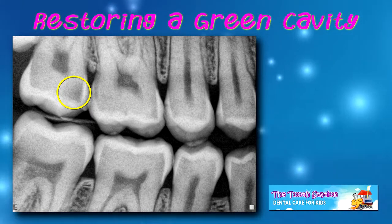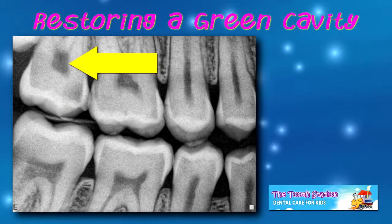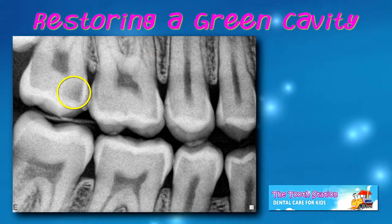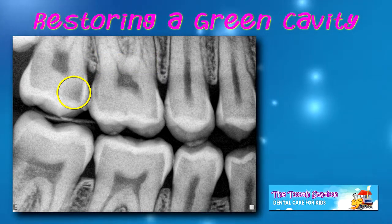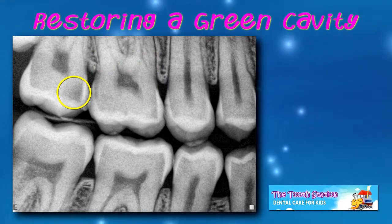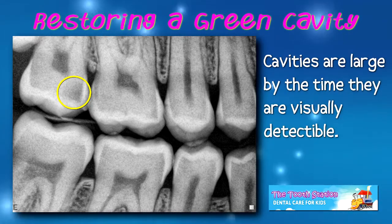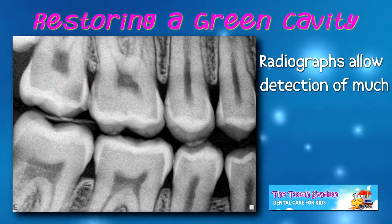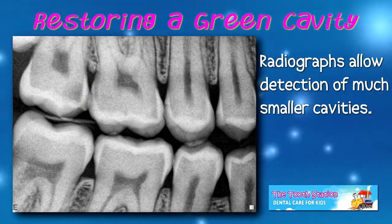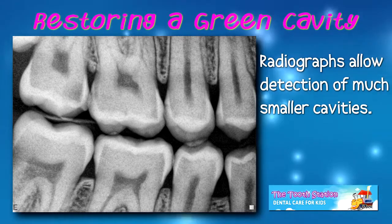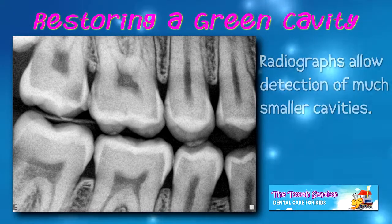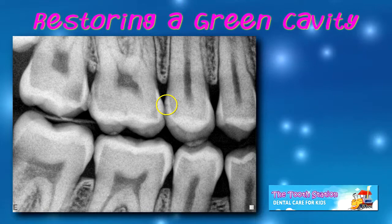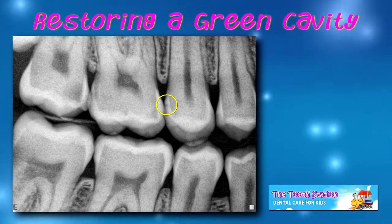This is a large cavity and is close to the pulp or nerve of the tooth. Typically, for cavities that develop between the teeth as this one did, by the time it is detectable visually they are large. On the other hand, radiographs allow detection of a cavity before it is very large, as can also be seen on this same radiograph and the tooth that is to the right.